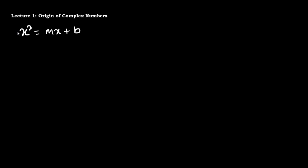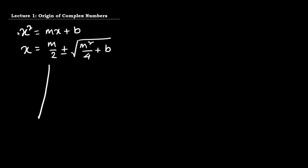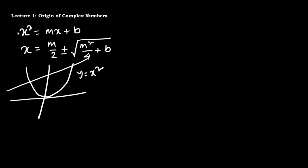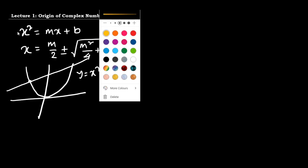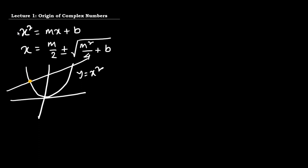To start with, let us consider a simple quadratic equation described as x² = mx + b. This quadratic equation can be solved by the Sridhar Acharya formula, and the solution can be written as x = m/2 ± √(m²/4 + b). If you try to plot the solution graphically, the solution will lie at the intersection of the two curves y = x² and y = mx + b.